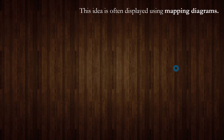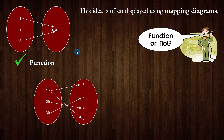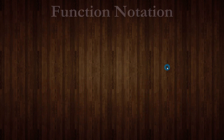Sometimes we use mapping diagrams to display relations or functions. Here's your input on the left and your output on the right. In this example every input only corresponds to a single output — 1 goes to 5, 2 goes to 5, and 3 goes to 5 — so this is a function. In the next diagram, the input value 10 corresponds to two different outputs: 3 and 9, so it does not represent a function. The third diagram has each input corresponding to only one output, so it is indeed a function.